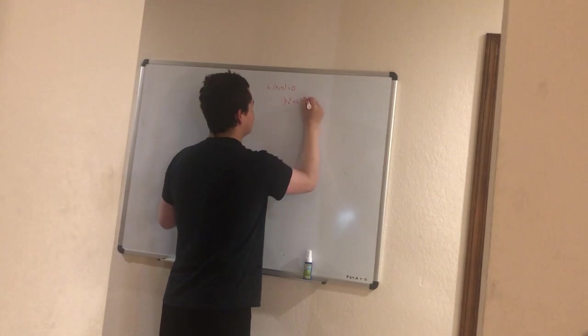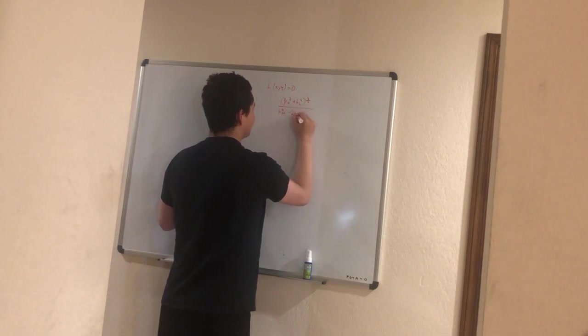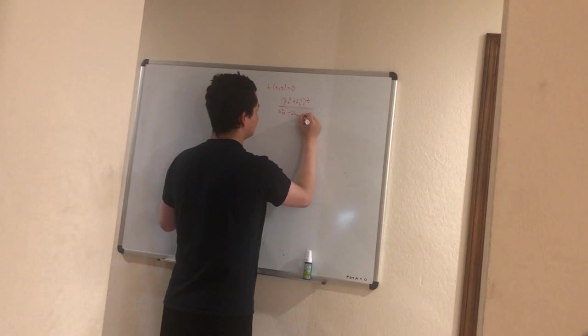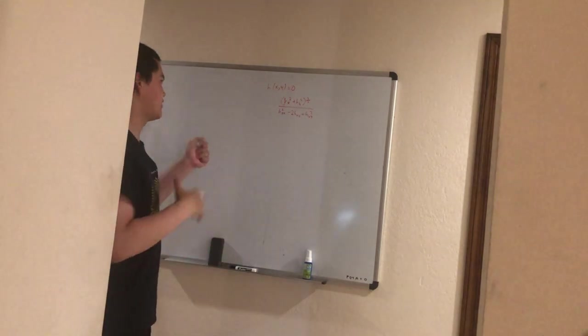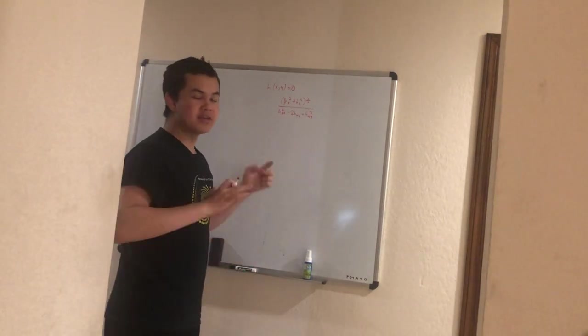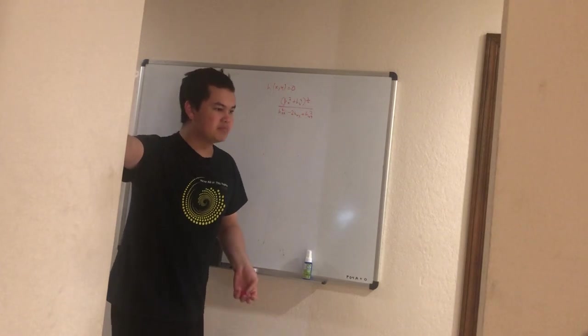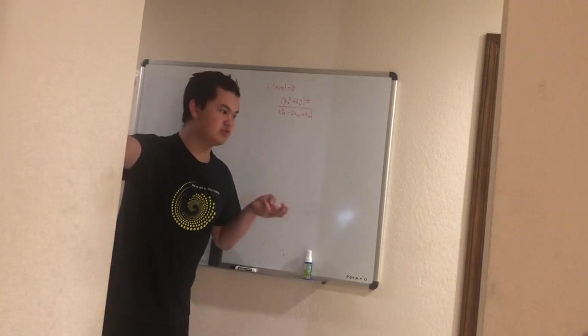Divided by h_xx squared minus 2h_xy... I forgot the actual expression. Something like this, right? It's some complicated expression of various partial derivatives of h. And we can calculate those partial derivatives based on our symbolic differentiation, which we can already do.